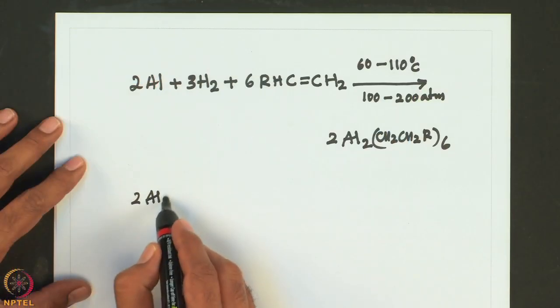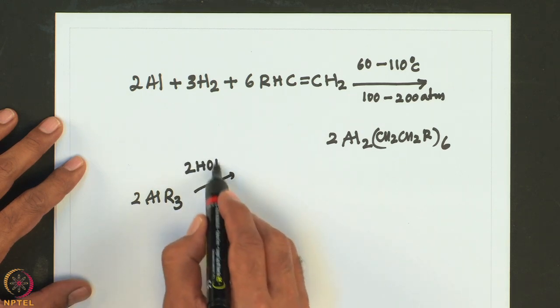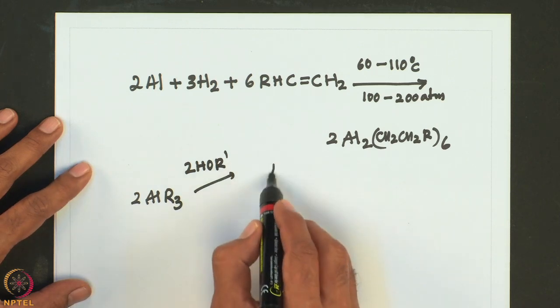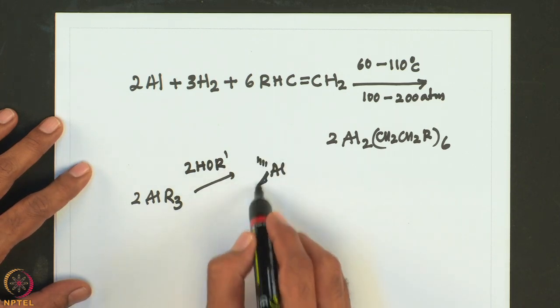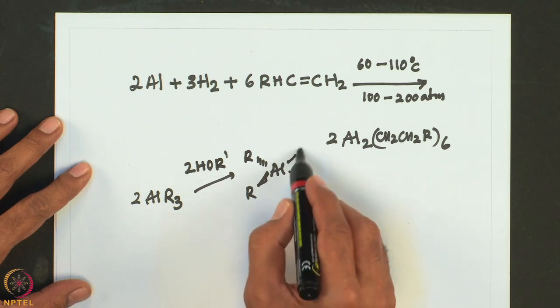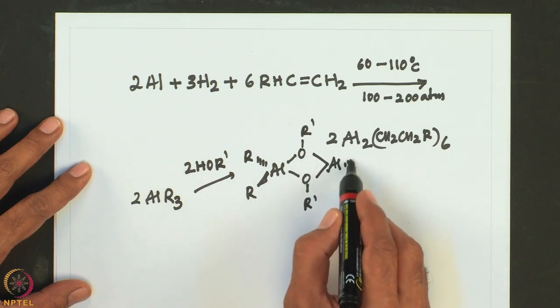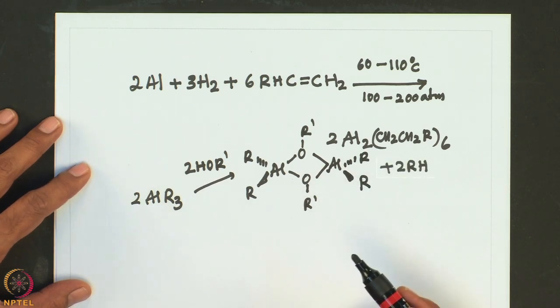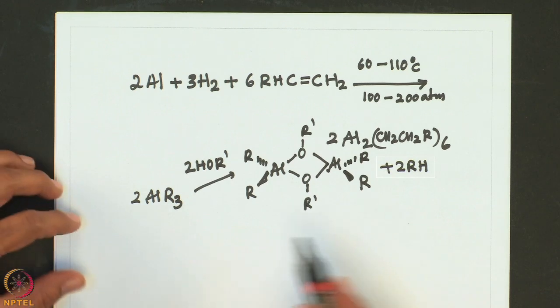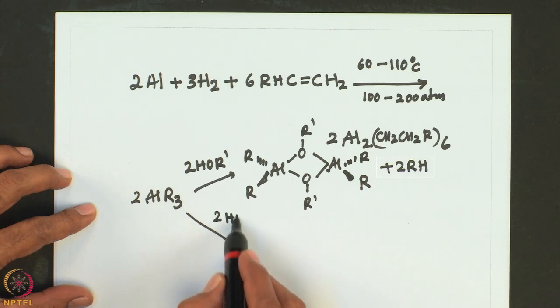These trialkyl aluminum compounds can undergo reactions with alcohols and amines. If we take 2 AlR3 and treat it with an alcohol, a substitution reaction occurs. Similarly, it can undergo reaction with a secondary amine.